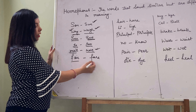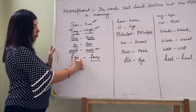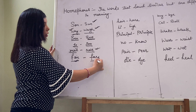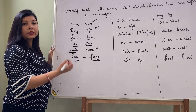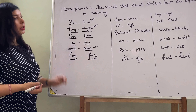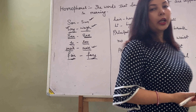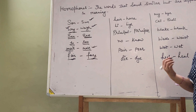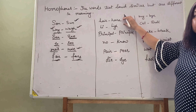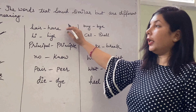Then 'fair' and 'fare'. Ye 'fair' ka matlab being good (just/fair). Is 'fare' ka matlab kya hota hai? Kisi jagah ka kiraya (travel fare). Toh is tarah se kai sare aur shabda hain, jo hume confused karte hain, kyunki sound bilkul ek jaisa hota hai, meaning alag hota hai.